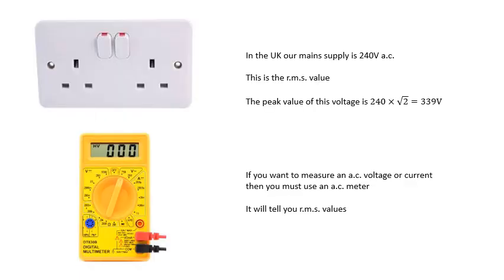Now in this country, our mains supply is 240 volts AC, and that is the RMS value. So that 240 volts is the RMS value. The peak value is 339 volts. If you use an ammeter or a voltmeter, it tells you the RMS value automatically. If you want to measure AC, then you need an AC meter, and that AC meter will tell you the RMS value of the voltage or the current.